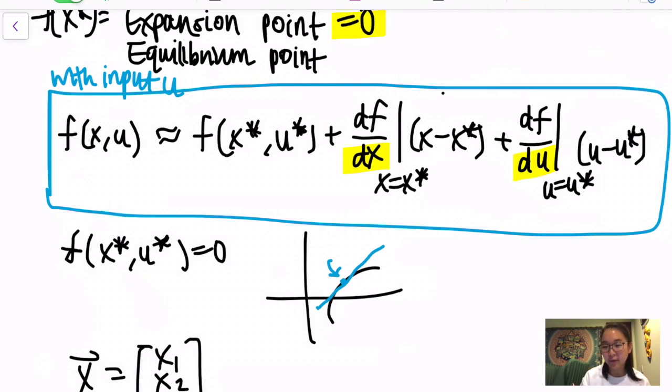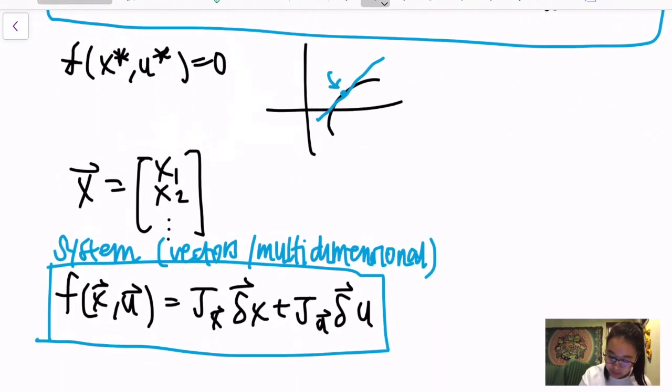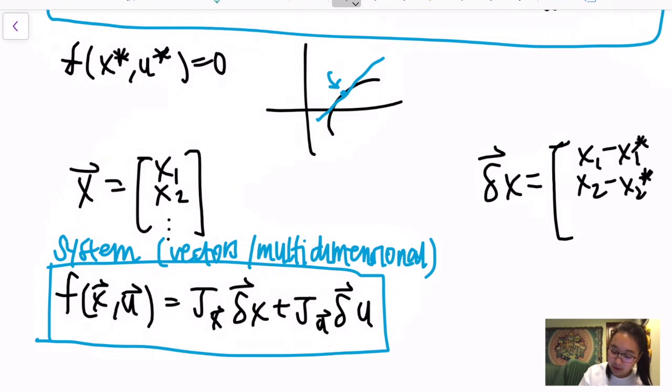The delta u is similar to earlier with the x - x*. It's just denoting the difference instead of writing that out directly, especially since it would be dependent on whether it is x1 or x2. Specifically, delta x as a function is equal to x1 - x1*, x2 - x2*, and so on. Same with delta u equals u1 - u1*, u2 - u2*, and so on.